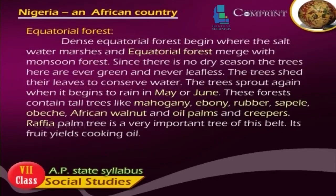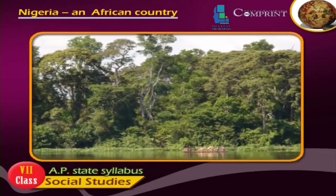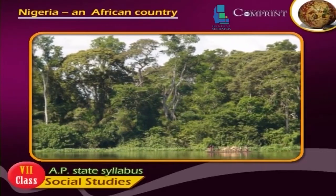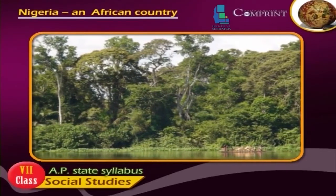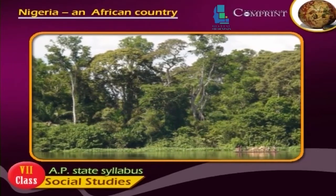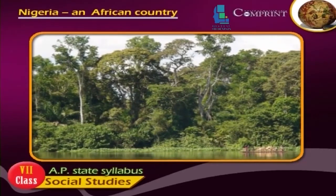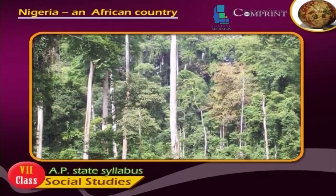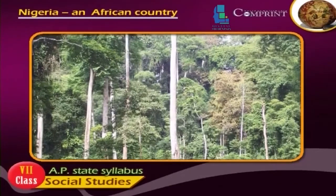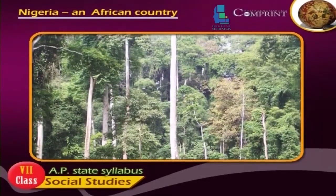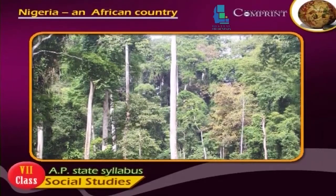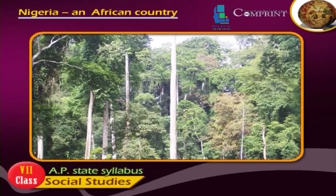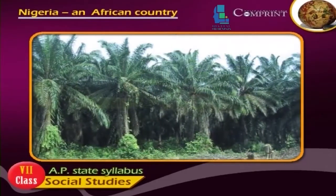Equatorial Forest. Dense equatorial forests begin where the saltwater marshes and equatorial forests merge with monsoon forests. Since there is no dry season, the trees here are evergreen and never leafless. The trees shed their leaves to conserve water and sprout again when it begins to rain in May or June. These forests contain tall trees like Mahogany, Ebony, Rubber, Sapele, Ovici, African Walnut, Oil Palms and Creepers.